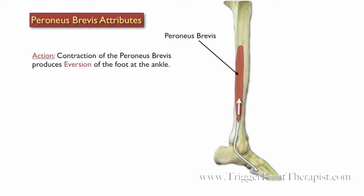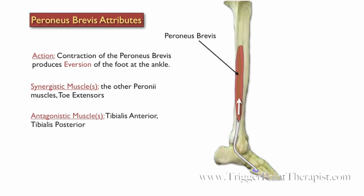Contraction of the Peroneus Brevis produces eversion of the foot at the ankle. The other Peronei muscles and the toe extensors are synergistic, and the tibialis anterior and tibialis posterior are antagonistic.